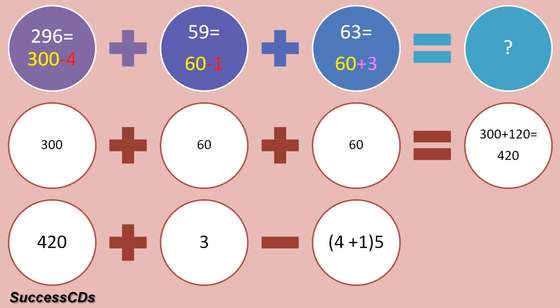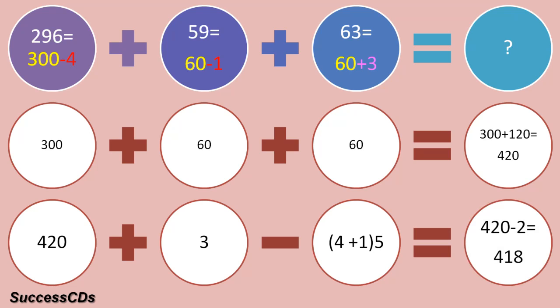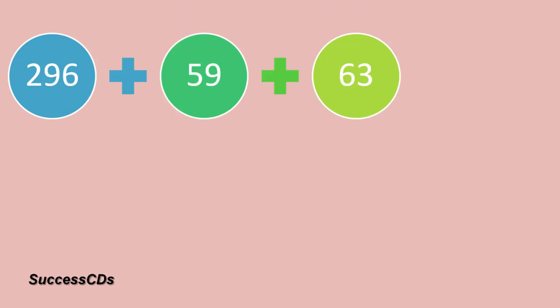From 420, you will subtract 5 and add 3. The answer will be 420 minus 2, that is 418. So the answer to this sum is 418.